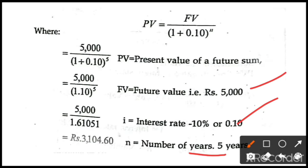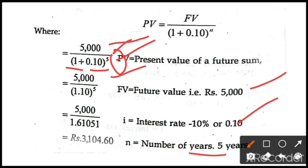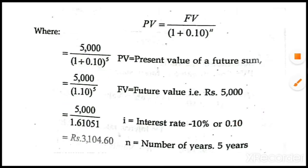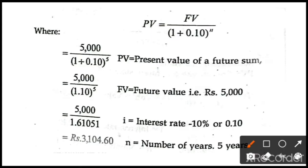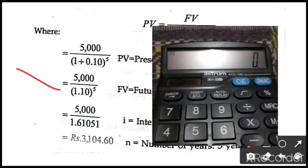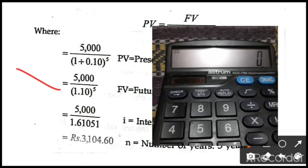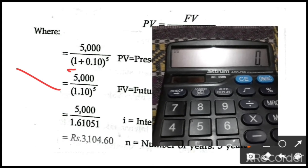We are going to substitute this information into the formula. Future value is 5000 rupees, the constant is 1, rate of interest is 10 percent or 0.10, and the power is 5 — that is the number of years. In the previous problem we took one year, but in this problem it is five years. So it is 5000 divided by (1 plus 0.10) to the power 5. Now I am going to show you how this is calculated.